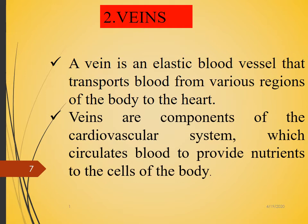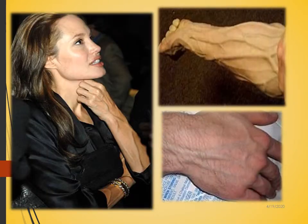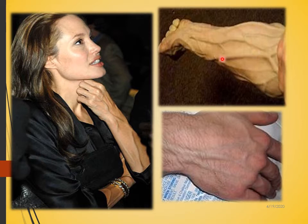Arterioles deliver blood to capillaries, and from capillaries the blood passes to venules. Venules then collect blood and pass it into veins, and these veins open into the right atrium of the heart. The wall structure of veins is similar to that of arteries — with tunica intima, tunica media, and tunica externa layers — but veins lack elastic tissue. The central lumen of veins is wider and larger than that of arteries because veins need to collect more blood, while arteries have a narrower lumen to push blood forcefully to distant parts.